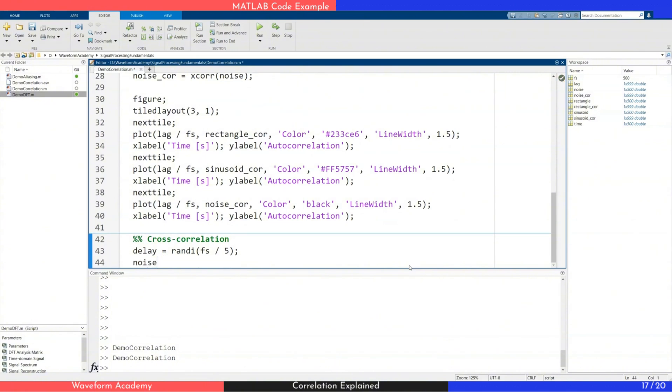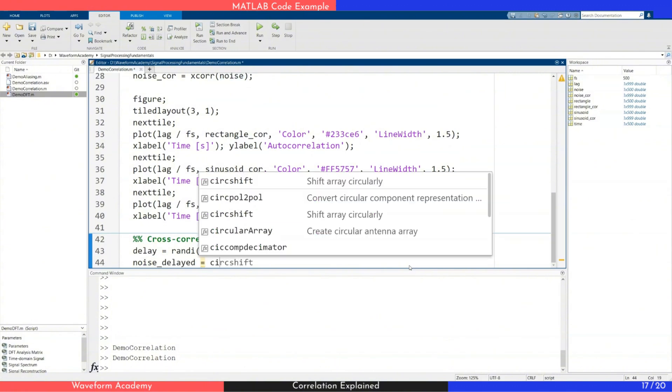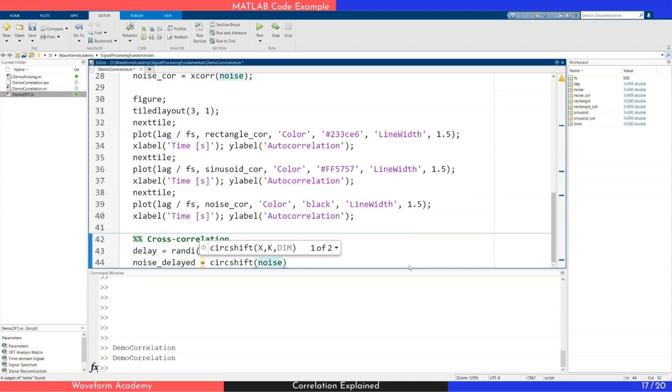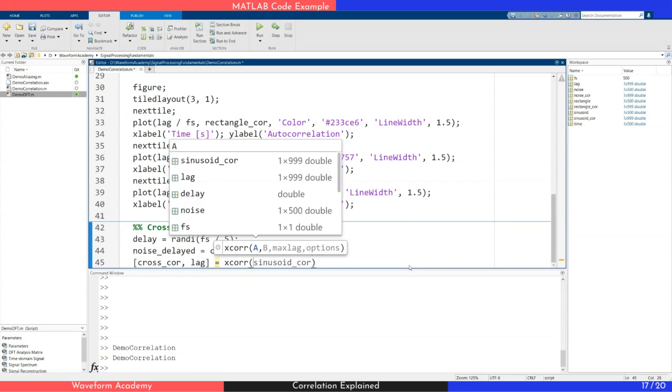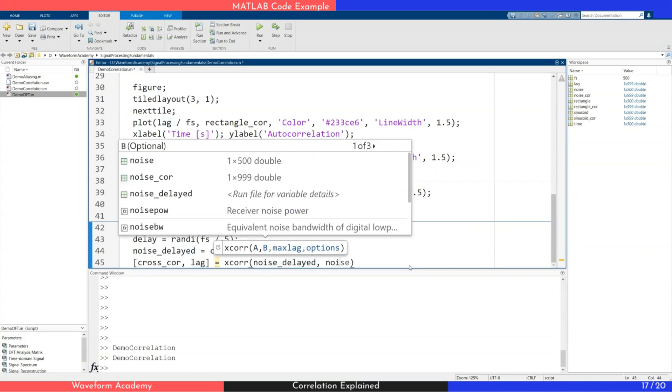Then, we create a delayed version of our noise signal, using MATLAB's circular shift function. To compute the cross-correlation, we use the xcorr function again, this time passing in both the original and delayed signals.